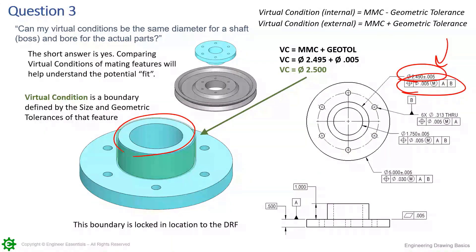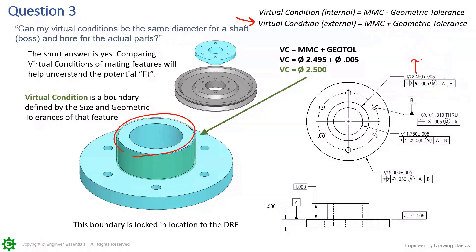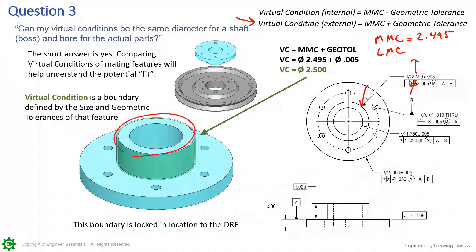Since this is an external feature, the virtual condition of any external feature is going to be the MMC size plus any geometric tolerance. The size dimension here is 2.49 ±0.005. Every feature of size has an MMC and an LMC state — they're just the limits of size that are allowed. For an external feature, MMC is the largest size, so MMC is 2.495. LMC is 2.485 — that's 2.49 minus 0.005.